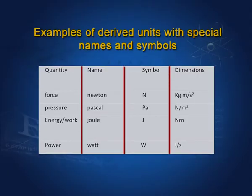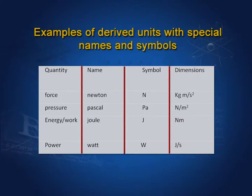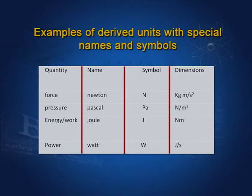Force is the first in the list. Its unit is newton, written with a small n — named after the great scientist Isaac Newton — and its symbol is capital N. Its dimensions are kilogram meter per second squared. If you want to write 10 newtons, write it with small n, or write 10 capital N. Pressure: the unit is pascal, named after the French scientist Pascal, written with small p. Its symbol is capital Pa, and its dimensions are newton per meter squared.